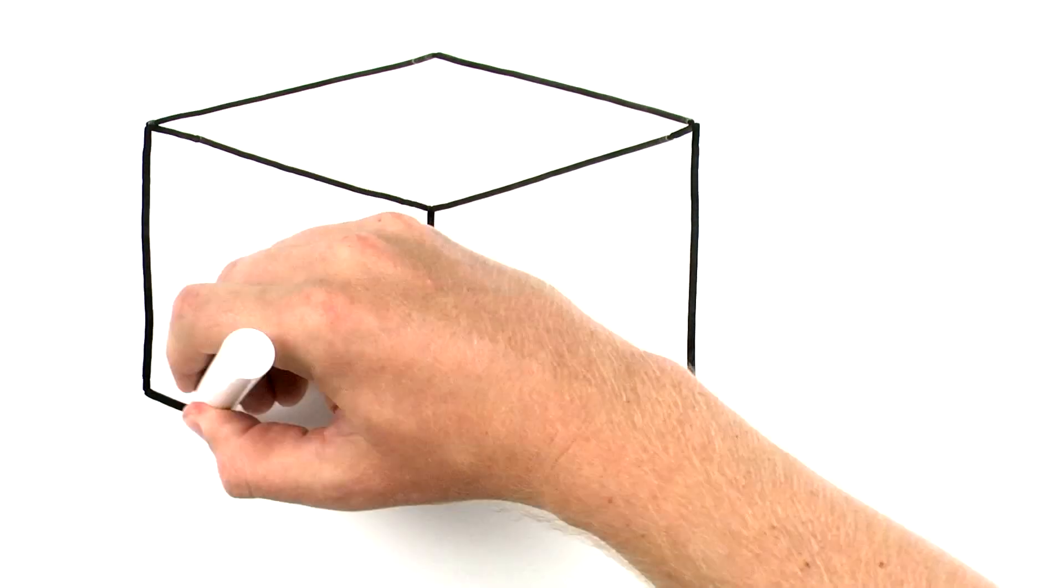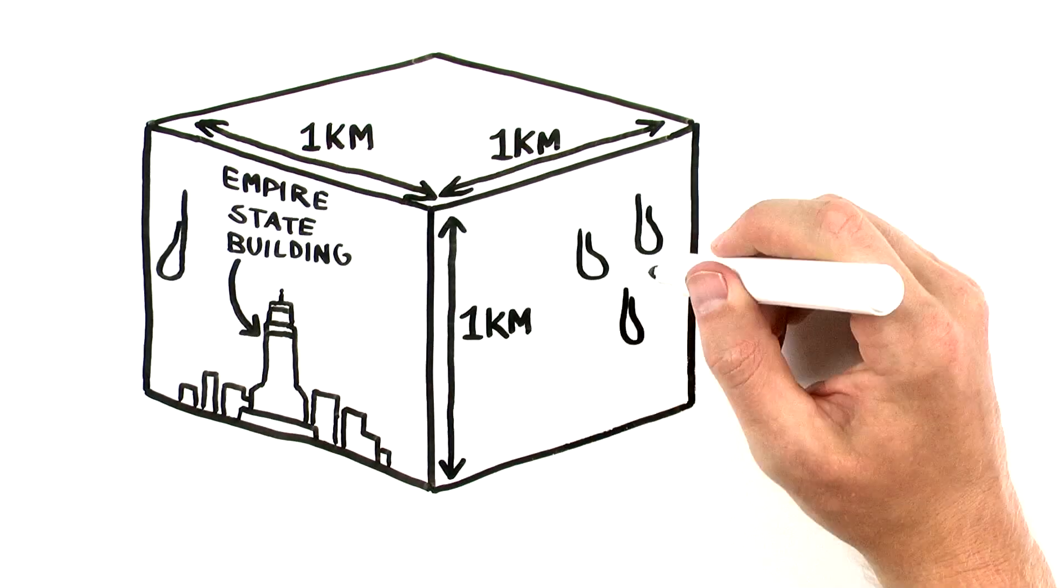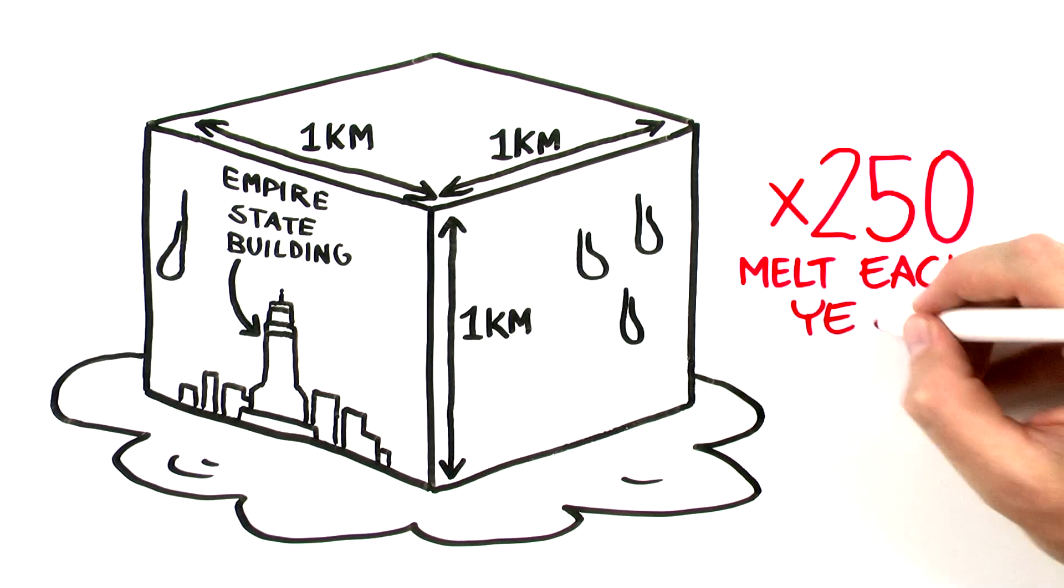What's a gigaton? It's a billion tons, which is approximately a block of ice one kilometer square. And 250 of these giant Greenland ice blocks melt every year.